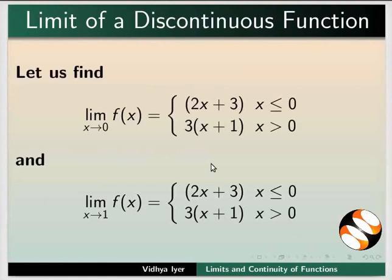Let us find limits of a piecewise or discontinuous function f of x. f of x is described by 2x plus 3 when x is 0 or less than 0. But f of x is described by 3 times x plus 1 when x is greater than 0. We want to find the limits when x tends to 0 and 1.